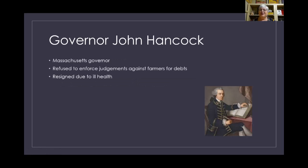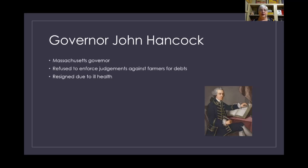The governor of Massachusetts at this time was John Hancock — you may remember him from the Declaration of Independence. He was refusing to enforce any of the debt judgments against the farmers or veterans. But he resigned due to ill health, and a new governor came in: Governor James Bowdoin. He was much more confrontational about the situation.